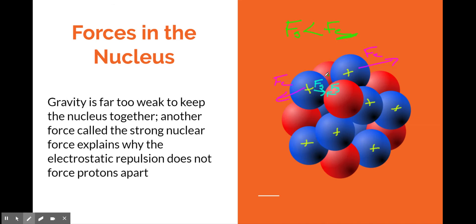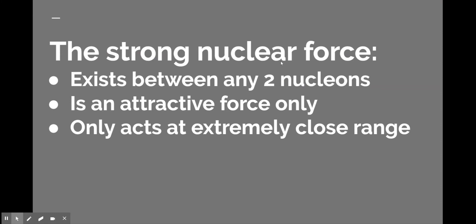The reason is that there's another force called the strong nuclear force, or the strong force. That strong force acts between neighboring particles as well, and it's an attractive force that exists at short range. The key features of the strong nuclear force are that it exists between any two nucleons — proton-proton, neutron-neutron, or proton-neutron. It is an attractive force only, not like electrostatics which can be pushes or pulls. And here's what makes it unique: it acts at extremely close range only.